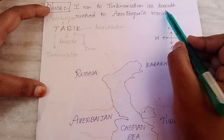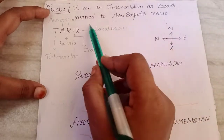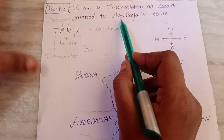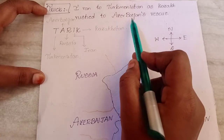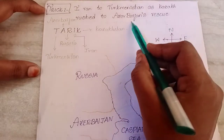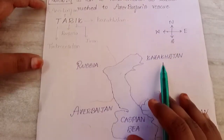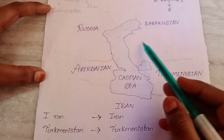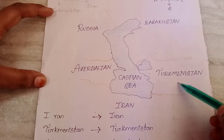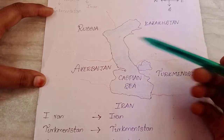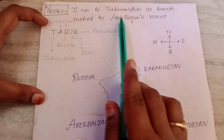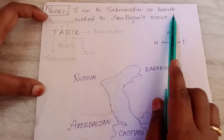'Kazakh' is used as a person's name who rushed to Azerbaijan's rescue. 'Baijan' means brother in Hindi, so 'Azerbaijan' sounds like 'Azer baijan' — Azer's rescue. In the Caspian Sea: in the south we have Iran, in the east we have Turkmenistan and Kazakhstan, and in the west we have Russia and Azerbaijan.